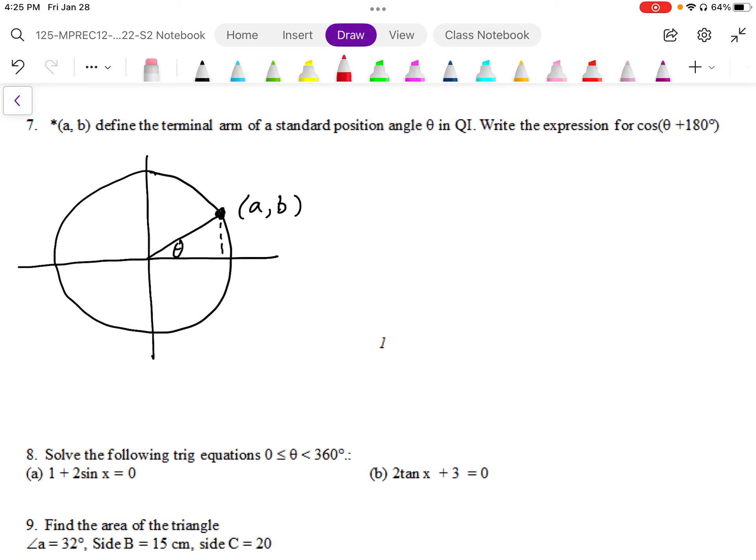So we're being asked to find the expression for cosine for this angle, theta plus 180. So the first thing we're going to do is locate theta plus 180. So it's going to be on the opposite side of the circle.